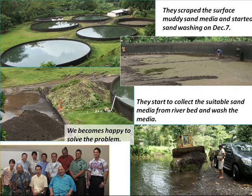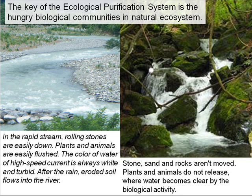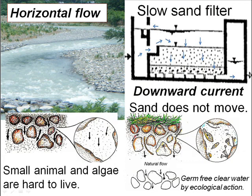We became happy to solve the problem. The key is the hungry organisms in the natural ecosystem. In a rapid stream, rolling stones are easily moved and plants and animals are easily flushed — the water is always white and turbid. Where rocks and stones are not moved, plants and animals can grow and the water becomes clear by biological activity.